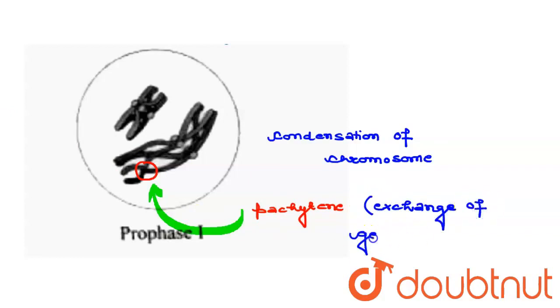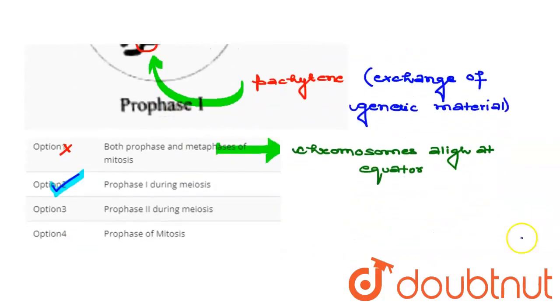After that, we will see the third option: prophase 2 during meiosis. This option is wrong. Lastly, prophase of meiosis—again, this option is wrong. So the correct answer remains option 2.